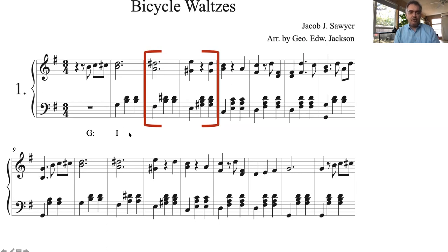We are in G. We start out on a I chord, then it goes to an A minor triad in first inversion. It goes to D7 — D, F-sharp, A, C — which is V7, and resolving to the tonic.